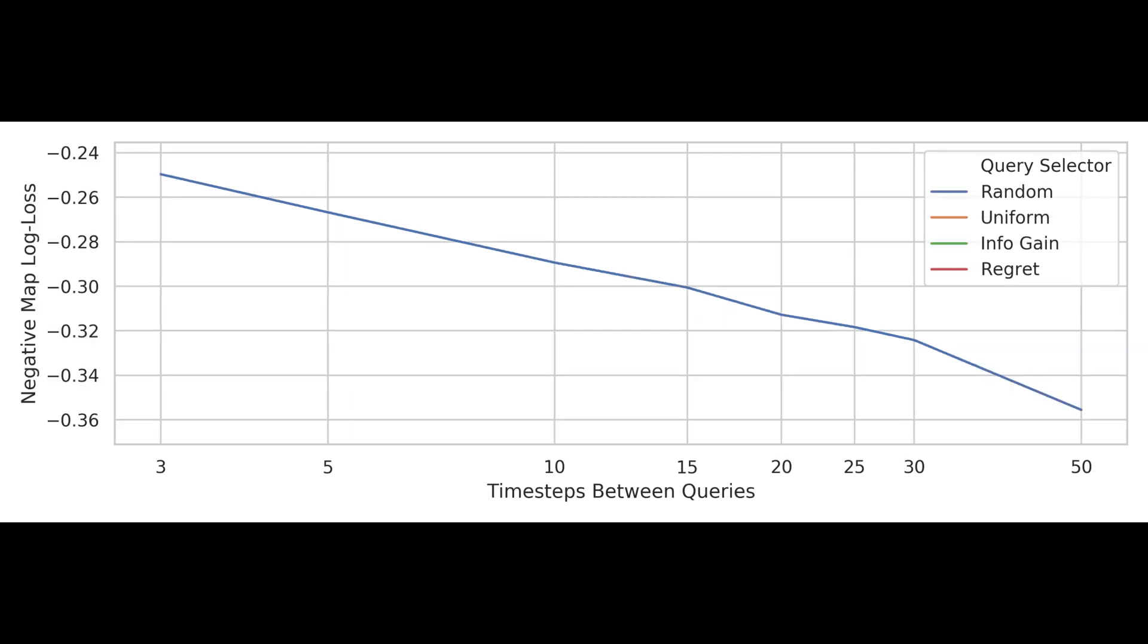We evaluate how well the robot learned the scientist's reward model by checking the accuracy with which the robot can predict the true interest map by the end of the mission. We measure this using negative log loss, for which higher is better.